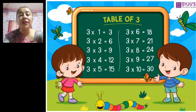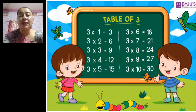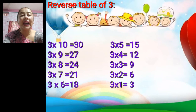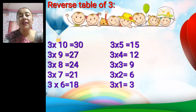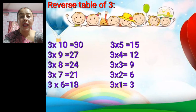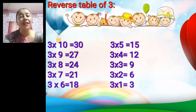You need to write the table of three in your copy both the straight way and the reverse way. The reverse table of three: three ten's are thirty, three nine's are twenty-seven, three eight's are twenty-four, three seven's are twenty-one, three six's are eighteen, three five's are fifteen, three four's are twelve, three three's are nine, three two's are six, and three one's are three.